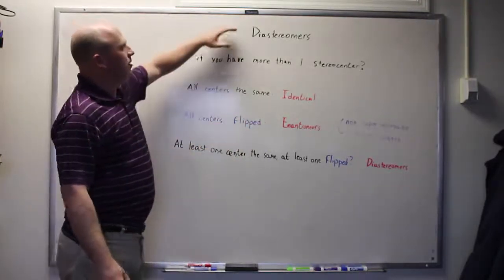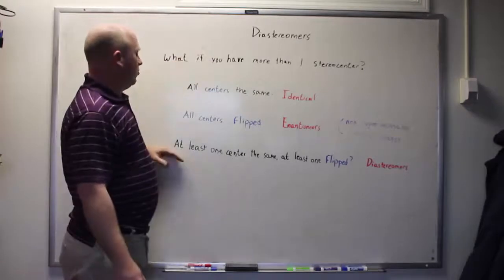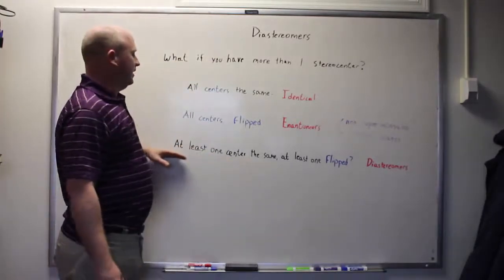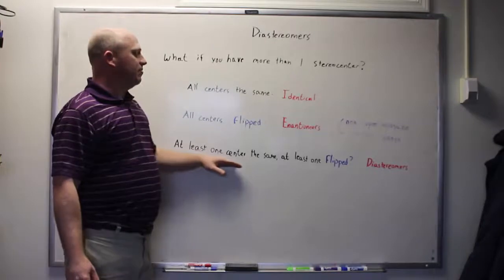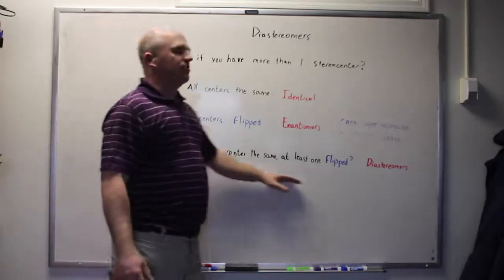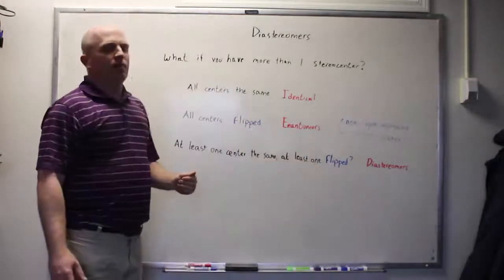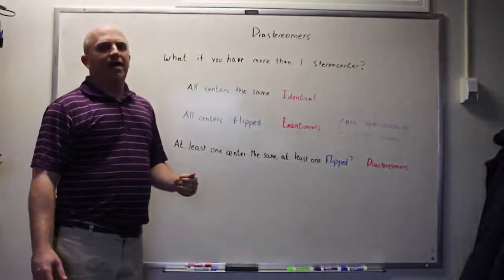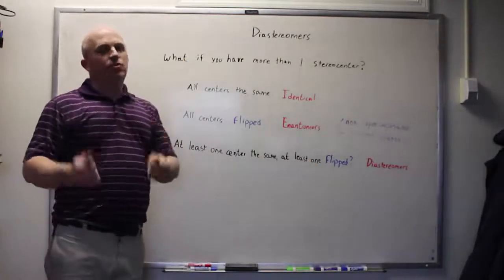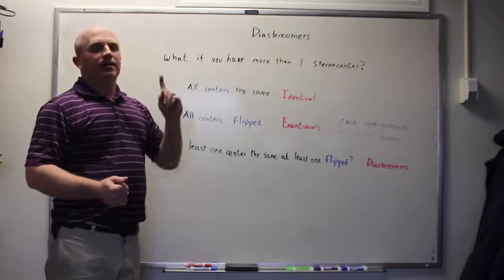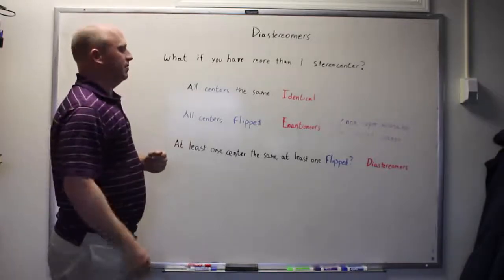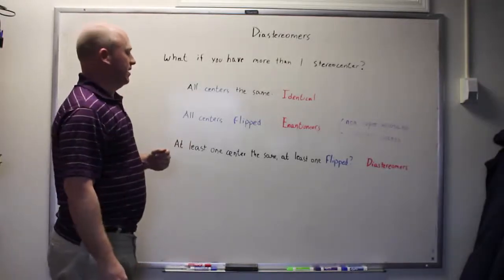So what is a diastereomer? A diastereomer is a pair of molecules wherein at least one stereogenic center has remained the same, but at least one stereogenic center has been flipped. In order for you to have diastereomers, you must have at least two stereogenic centers. At least one has to remain the same, and at least one has to be flipped.